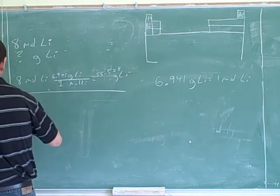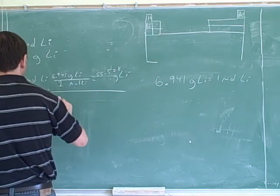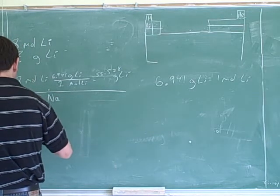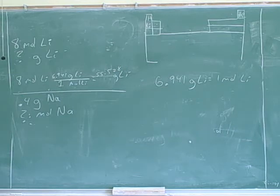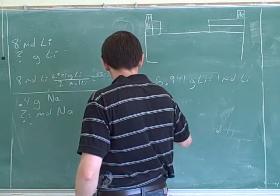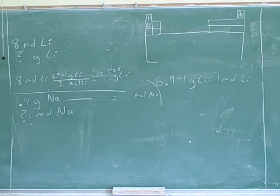Alright, so if we've got 0.4 grams of sodium, let's figure out how many moles of sodium we have. Why don't we round that off to 23, that would be good enough. We can start rounding things off more now. So we can just say one mole of sodium is 23 grams.